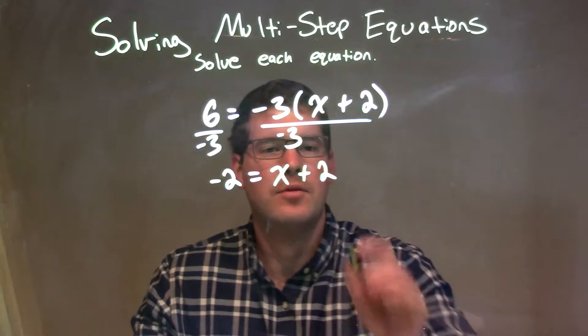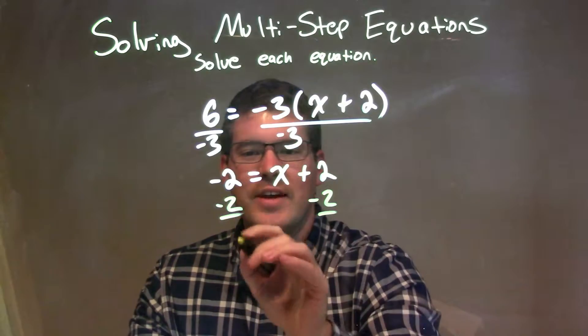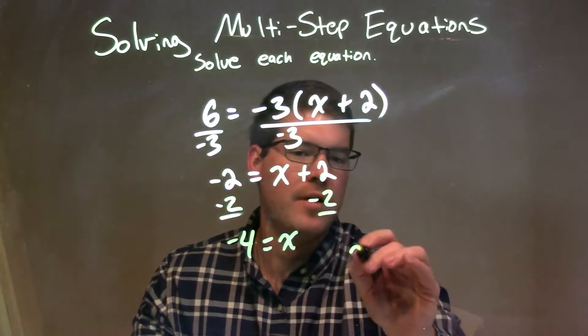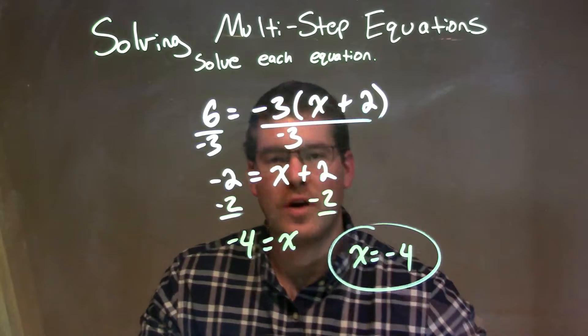So then from there, all I have to do is subtract 2 to both sides. And negative 2 minus 2 is a negative 4. And that is equal to just my x on the right. Rewrite that x comes first. So we have x equals a negative 4 as our final answer.